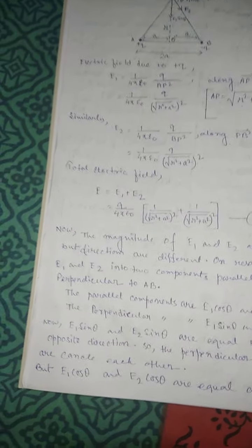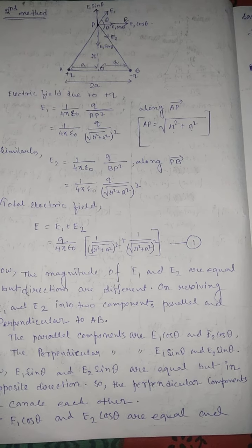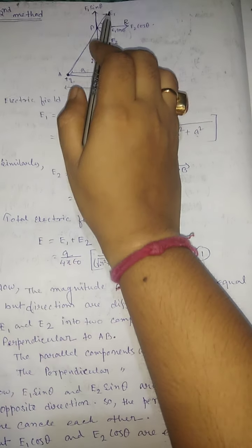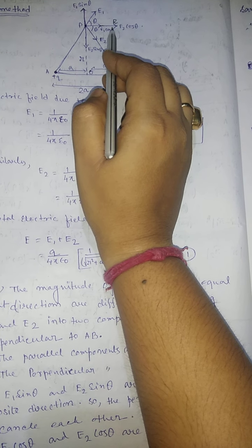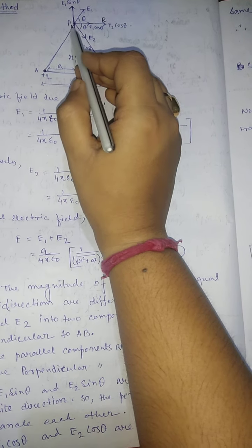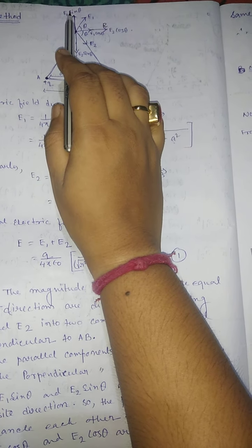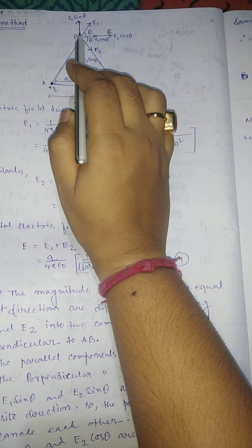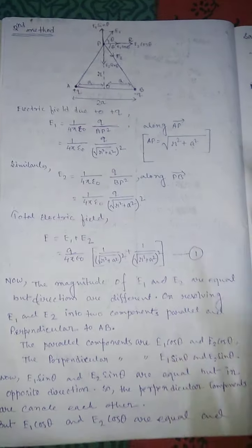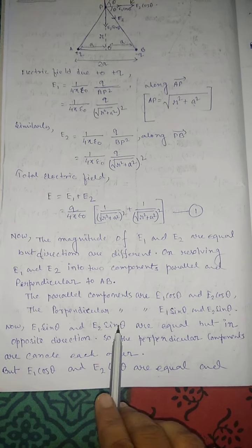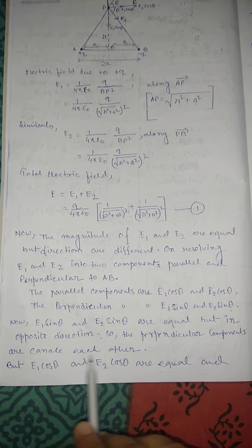We resolve the vectors into two components as studied in Class 11: a cos component and a sin component. E1 has components E1 cosθ and E1 sinθ; E2 has components E2 cosθ and E2 sinθ. The sin components E1 sinθ and E2 sinθ are equal in magnitude but in opposite directions, so they cancel each other.